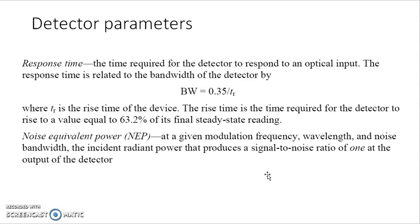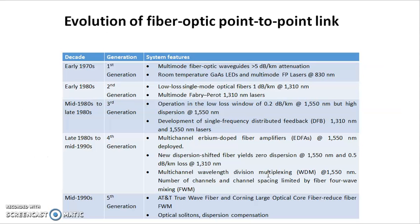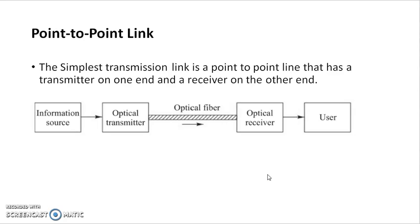For a point-to-point link, the evaluation of fiber links began in the early 1970s — that is the first generation — in which multimode fiber was used with attenuation of 5 dB per kilometer, working with LED sources. Today, optical fiber has low attenuation and is used for long-distance communication with low dispersion. These are the basics of a point-to-point fiber link — a simple transmission link from source to user.